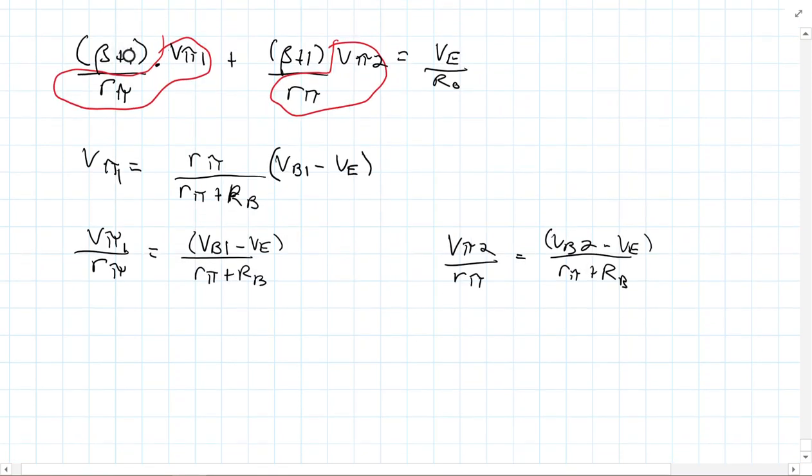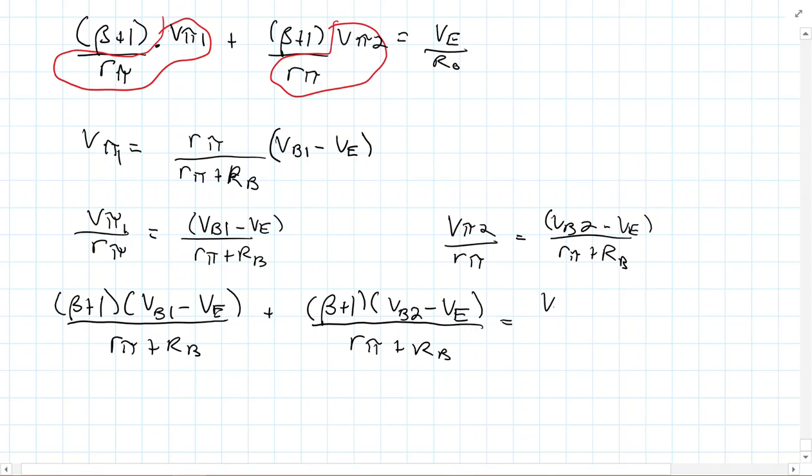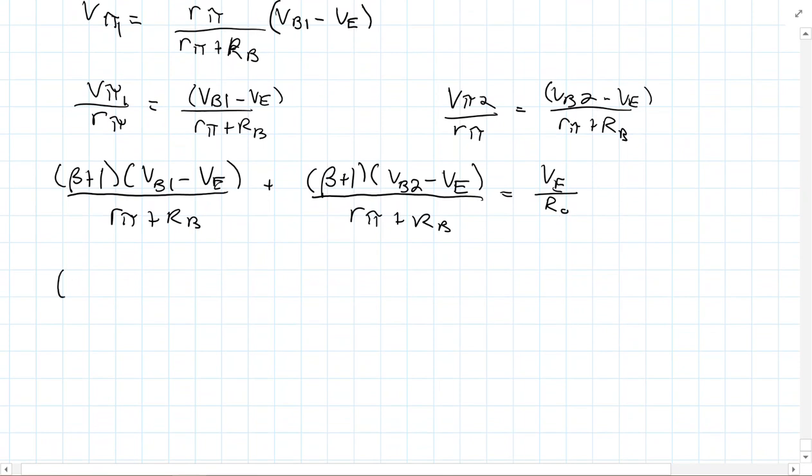And so, we need to fix this. And basically, this just becomes minus VE, and this one just becomes minus VE. Now, let's go ahead. We're still doing the same kind of substitution. But now, what we'll have is we'll have beta plus 1 times VB1 minus VE over RPi plus RB plus beta plus 1 times VB2 minus VE over RPi plus RB. Now, I'll simplify this out a tiny bit here. You could rewrite this as VB1 plus VB2 minus 2VE times beta plus 1 over RPi plus RB.